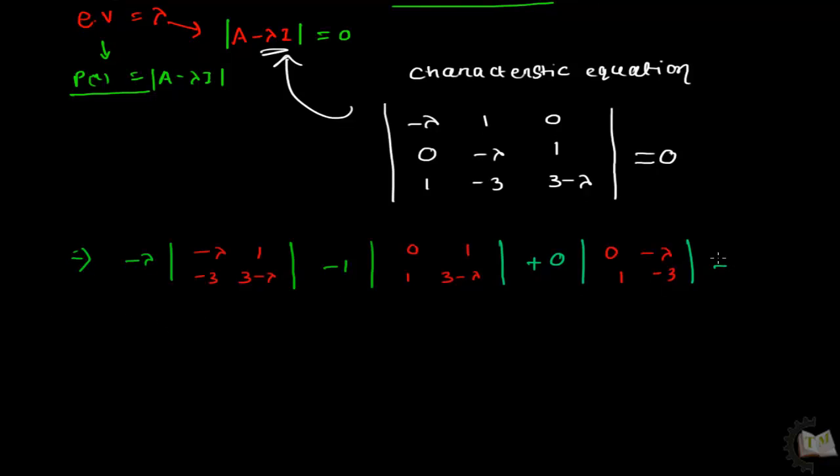Now solve it. If you multiply minus lambda and find the determinant of this 2 by 2 matrix, it will be minus 3 lambda plus lambda squared plus 3.